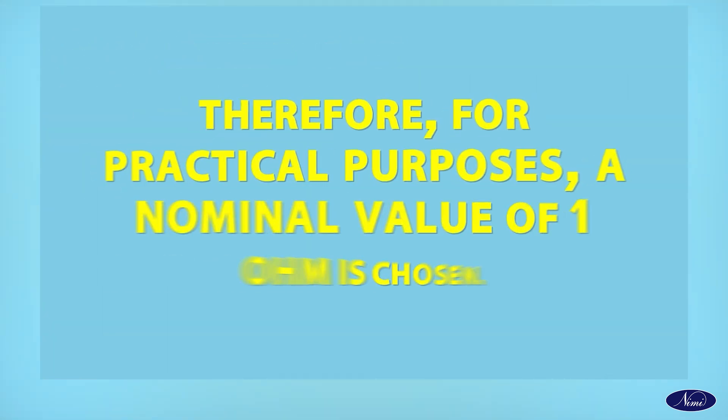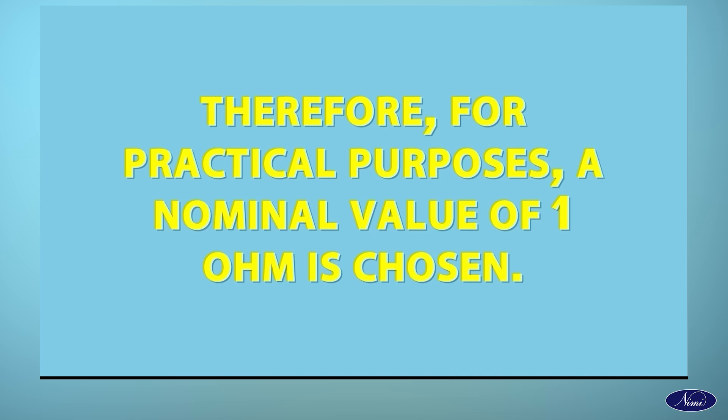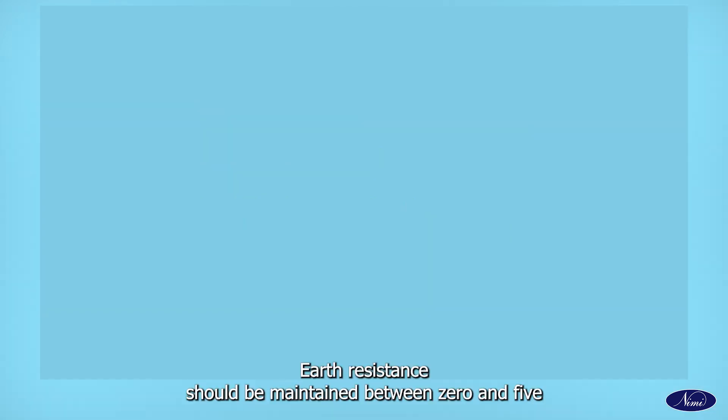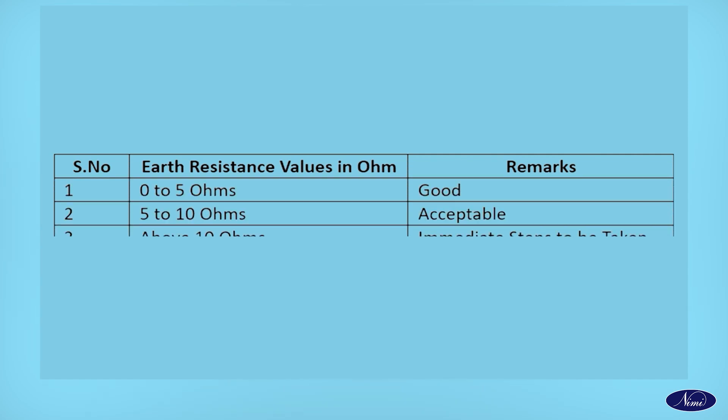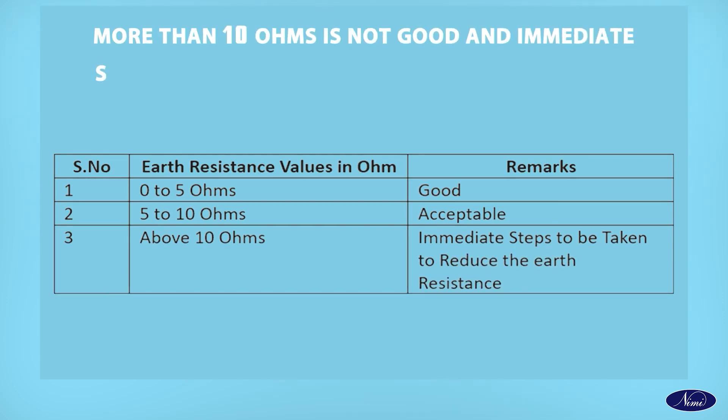Therefore, for practical purposes, a nominal value of 1 Ohm is chosen. Earth Resistance should be maintained between 0 and 5 Ohms and up to 10 Ohms can be acceptable. More than 10 Ohms is not good and immediate steps should be taken to reduce it to normal values.